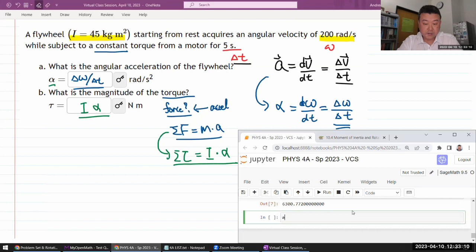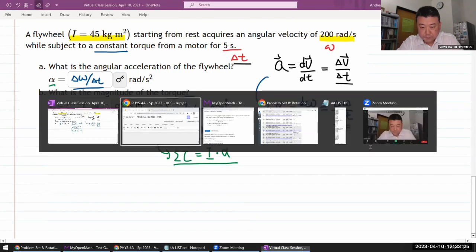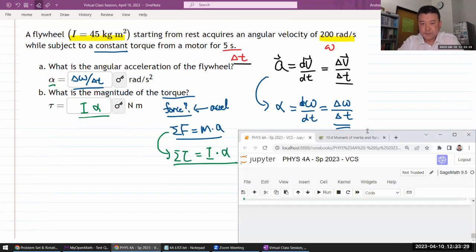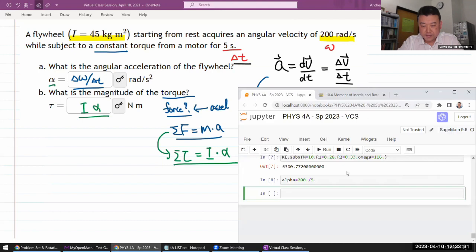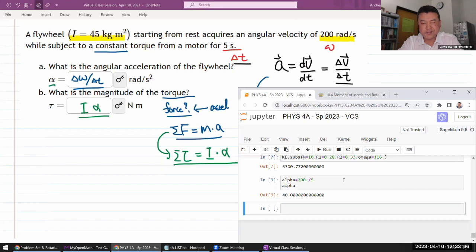So angular acceleration is change of angular velocity, 200 radians per second, because it's starting from rest. It's going up to the value divided by five seconds. Oh, I could have done that in my hand. Okay, that's a, oh, yeah, I've got to print that. Okay, 40 radians per second squared. That sounds right.